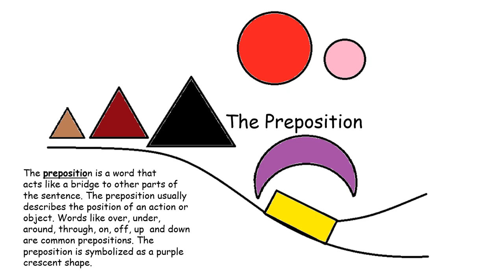The preposition is a word that acts like a bridge to other parts of the sentence. The preposition usually describes the position of an action or object. Words like over, under, around, through,